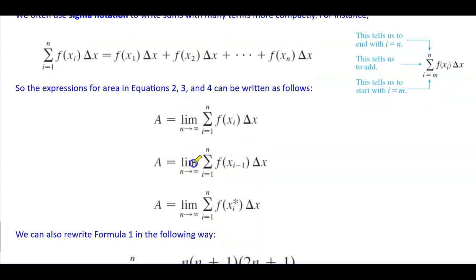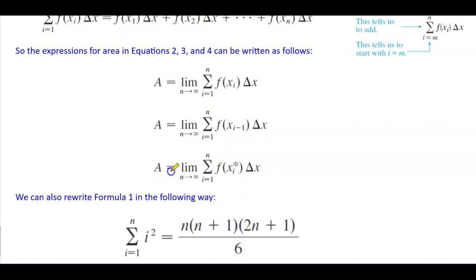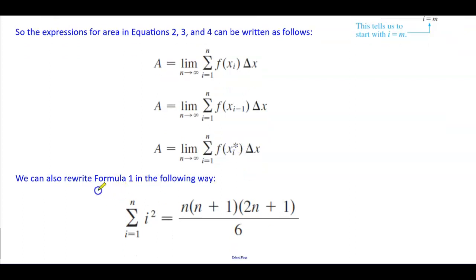For equation 3, the area equals the limit as n approaches infinity of the sum from i equals 1 to n of f(x subscript i minus 1)·Δx. Likewise, A equals the limit as n approaches infinity of the sum from i equals 1 to n of f(x subscript i*)·Δx, using the sample point height times width. We can also rewrite formula 1 as: the summation from i equals 1 to n of i squared equals n(n+1)(2n+1) over 6, which was seen in the previous example.